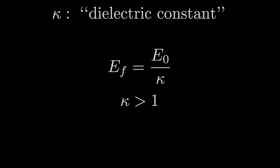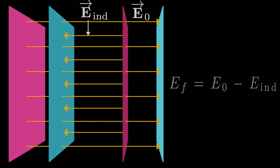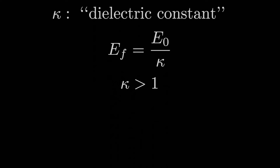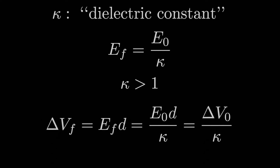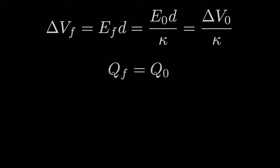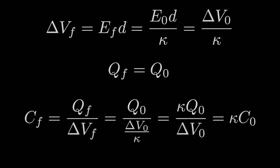If we know the electric field decreases after inserting a dielectric, then kappa has to be greater than 1 so that the new electric field is smaller than the old. Since the potential difference is E times d in magnitude, and d doesn't change, the potential difference decreases by the same dividing factor kappa. If the charge stays the same after inserting a dielectric, the new capacitance equals the old charge divided by the new potential difference — which is the old potential difference divided by kappa. Therefore, the new capacitance is kappa times the old capacitance, increased by a factor of kappa.